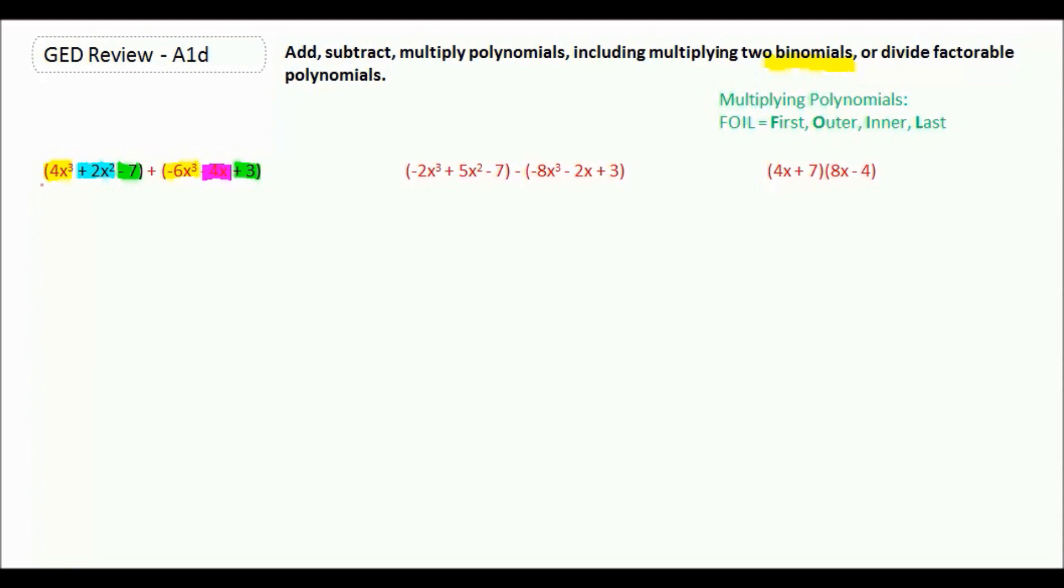Putting them together, 4x cubed plus a negative 6x cubed is a negative 2x cubed. There's nothing to pair up with our 2x squared, so that stays the same. There's nothing to pair up with our negative 4x, so that also stays the same. And then negative 7 plus 3 is a negative 4.